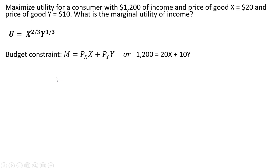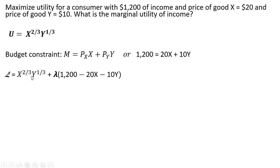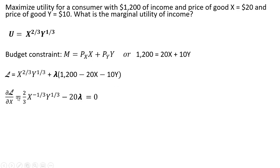We're going to set up the Lagrange to maximize utility subject to the constraint. Here is our objective function — we're trying to maximize utility — and we have our constraint, where lambda is being multiplied through by the constraint. We're going to get three partial derivatives.